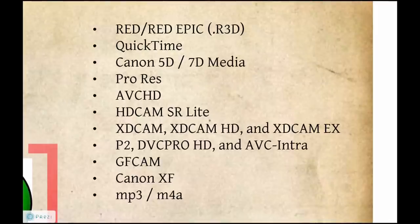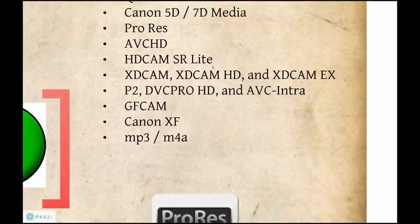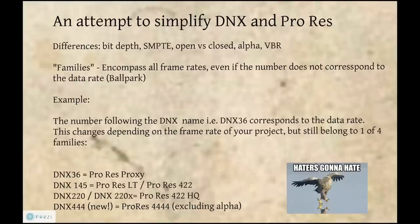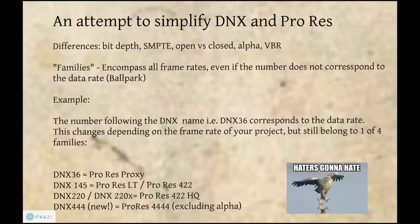We still have Red and QuickTime, Canon 5D and 7D support, ProRes, AVCHD, XD Cam, all the flavors of P2 including AVC Intra, Ikegami GF Cam, and also MP3 and M4A. What's the difference between DNxHD and ProRes? DNxHD is all 8-bit unless there's an X next to the codec name, in which case it's 10-bit. ProRes is all 10-bit unless it's 4444, which is 12-bit. DNxHD is a SMPTE standard, which means it's more open. Apple keeps their cards close to their chest, so ProRes gets licensed out in a very limited fashion.